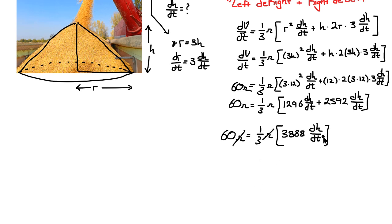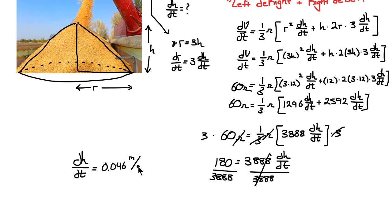I can actually cancel these pies. Multiply both sides by 3. So that's going to make 180, is equal to 3888 dhdt. Finally, dividing both sides by 3888. We arrive at our answer, that dhdt, the rate at which the height is changing with respect to time, is 0.046, let's say, meters per second.